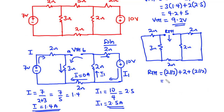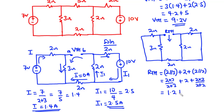So this becomes (2 times 3) divided by (2 plus 3), plus 2, plus (2 times 2) divided by (2 plus 2). 2 times 3 is 6, divided by 5 is 1.2. Plus 2. 2 times 2 is 4, divided by 4 is 1. Therefore 1.2 plus 1 is 2.2, plus 2 is 4.2. So Rth equals 4.2 ohms.